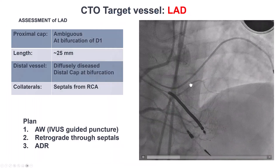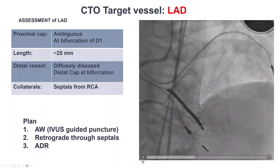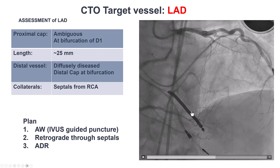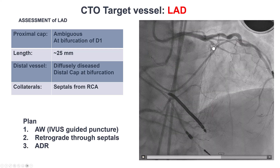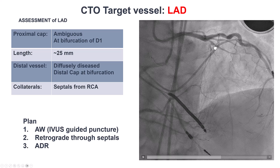To summarize, what we have here is a mid-LAD CTO around the takeoff of a diagonal branch, with proximal cap ambiguity. The lesion length is about 25 mm, there is a diffusely diseased distal vessel, and septal collaterals are present.